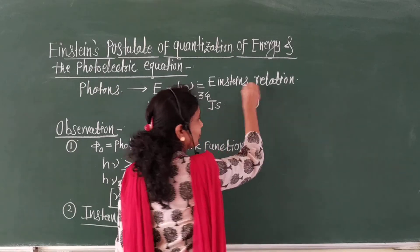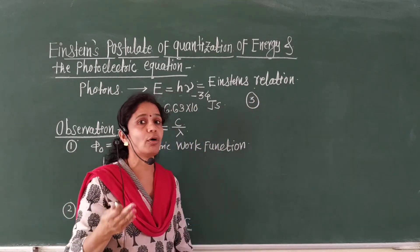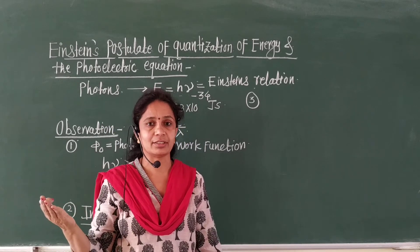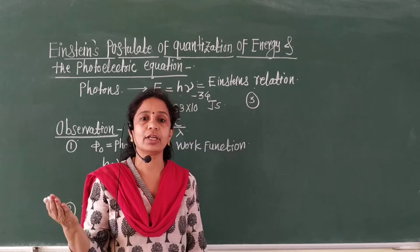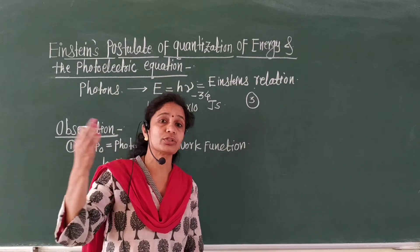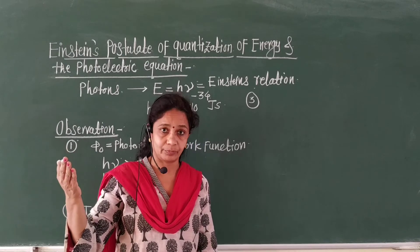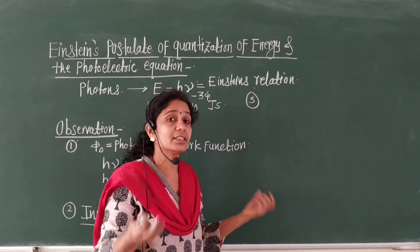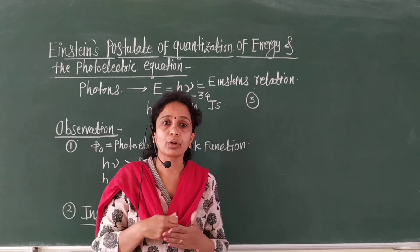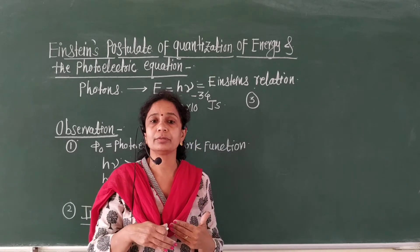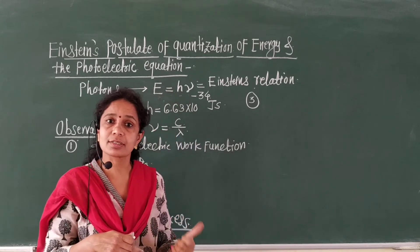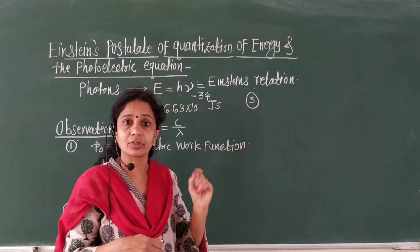The third point: as the intensity of incident radiation increases, the number of photons also increases. As the number of photons increases, the current will be large — photoelectrons are emitted and photoelectric current will be more. As the intensity decreases, there will be a smaller number of photons and a smaller photoelectric current flowing through the circuit.